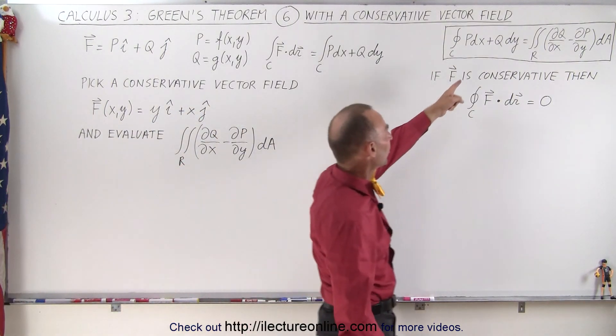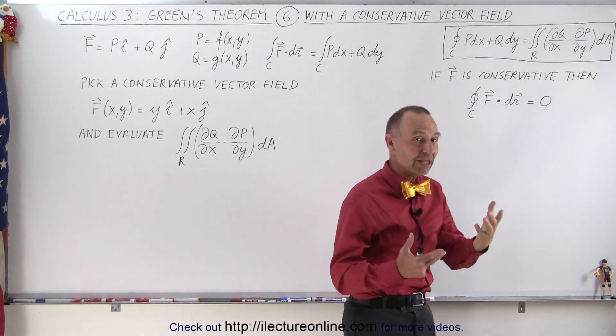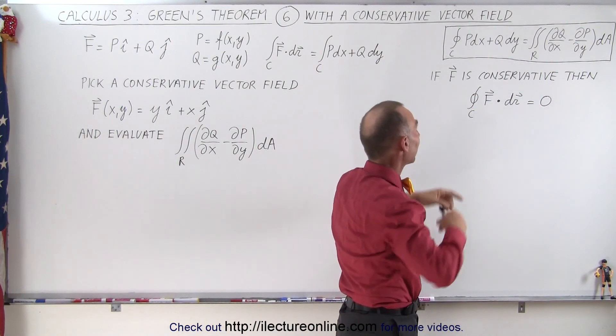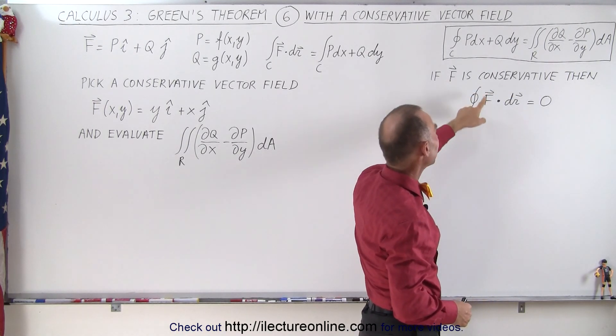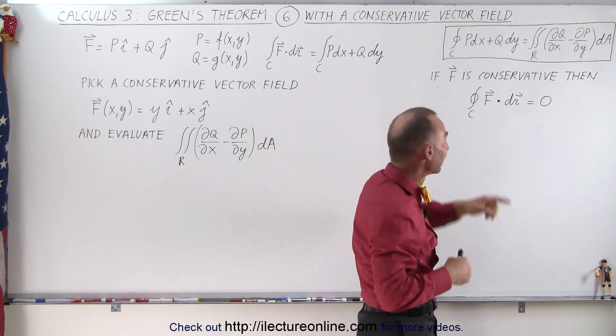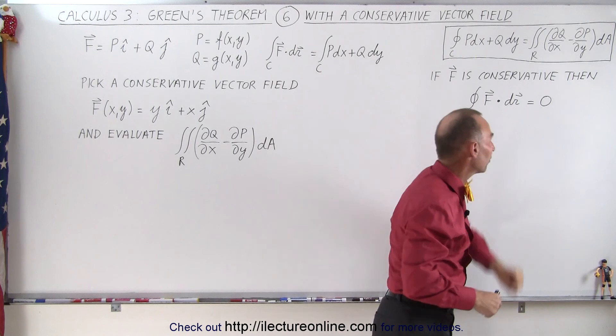Here again we have Green's Theorem on the board, and we realize that if the vector field over which we're going to do a line integral is a conservative vector field, then the complete loop line integral along a complete loop of f dot dr must equal zero.